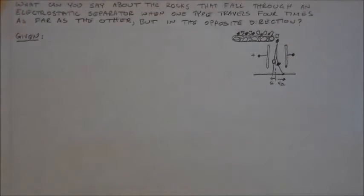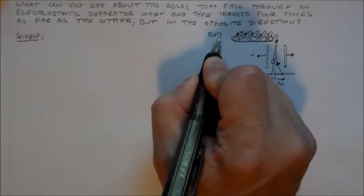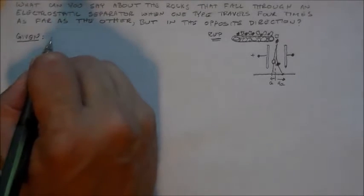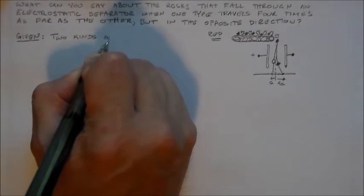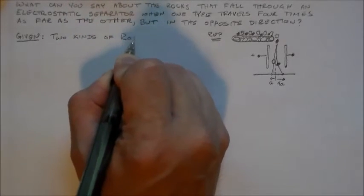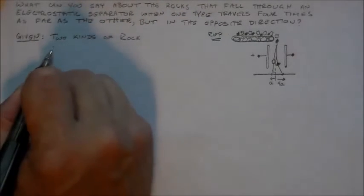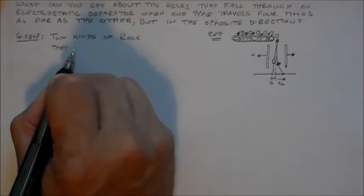So what are we given in this problem? In each one of these problems, I want to start off with both the representation, which I just drew, helping me to explain the problem. And then I want you to tell me what sort of things you're given, what things you know about the problem. You've got two kinds of rock. Here's one thing that you know. You've got two kinds of rock.